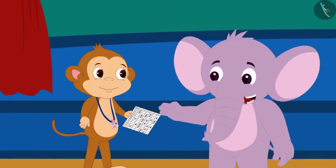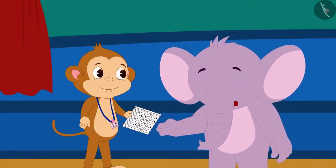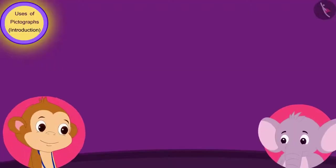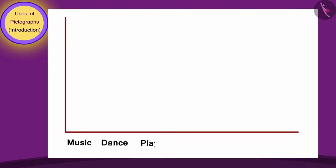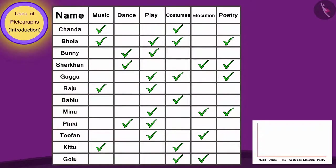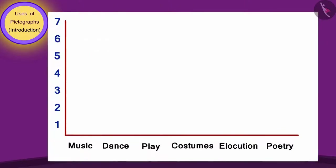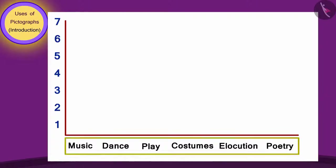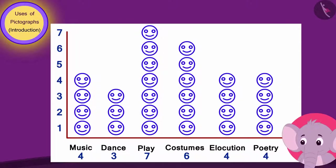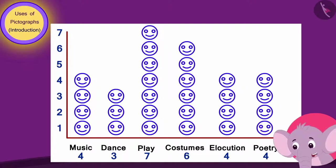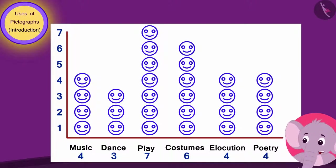Don't worry, Babban, I will tell you a simple way to do this. Appu saw Babban's table and drew two lines on a paper. He first wrote down the names of all the programs near the lower line. Then Appu once again looked at Babban's table and made symbols of faces on top of the names of each program and told Babban, you can find out how many children have participated in each program with the help of this pictograph.